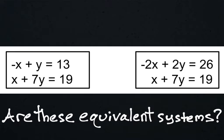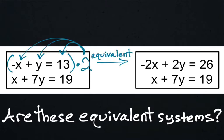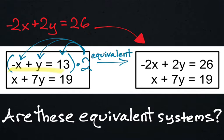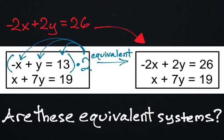By using the distributive property with the number two, we are able to rewrite the top equation into a new one in red, and that is the same equation that you see in the second system at the top. The second equation stayed exactly the same. So yes, these systems are equivalent because the only thing that changed going from the first system to the second was that the number two was distributed to that top equation.